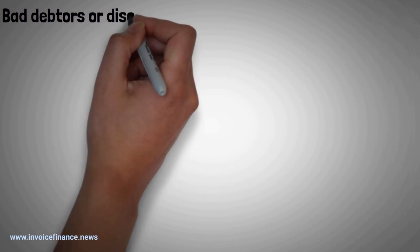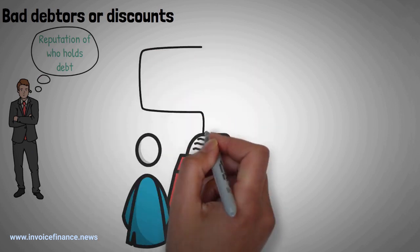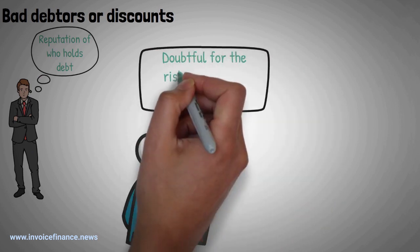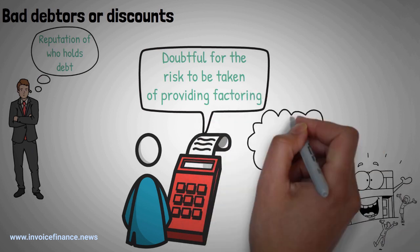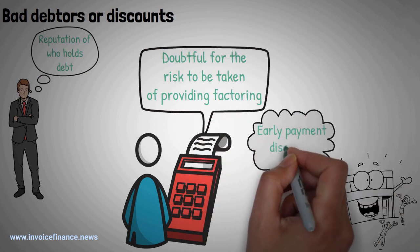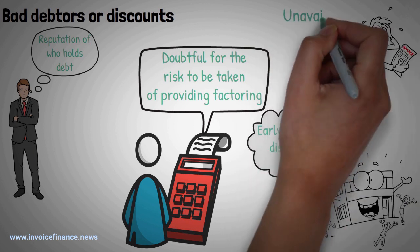Bad debtors or discounts. An invoice financier will look carefully at the reputation of who owes debt. The payment of some debts is too doubtful for the risk to be taken of providing factoring. Also, if a company offers discounts, such as early payment discounts, then those invoices affected by such discounts will be unavailable for factoring.